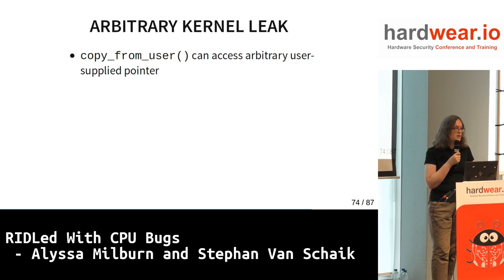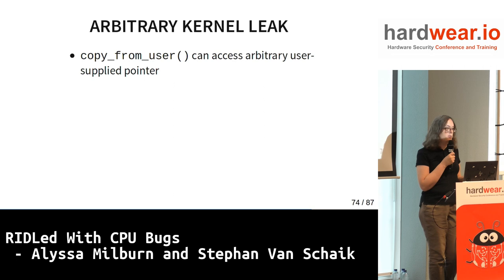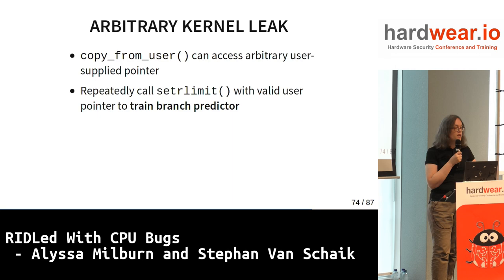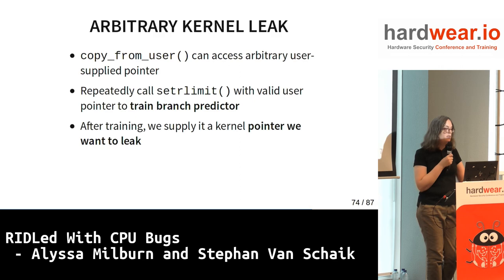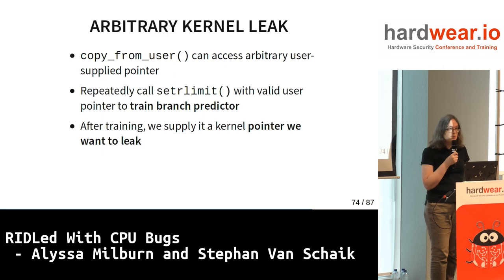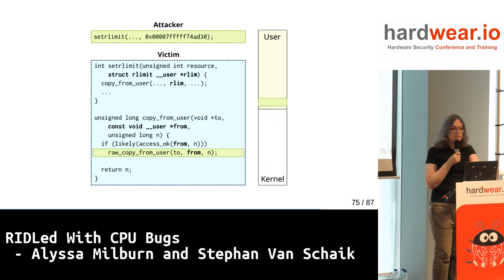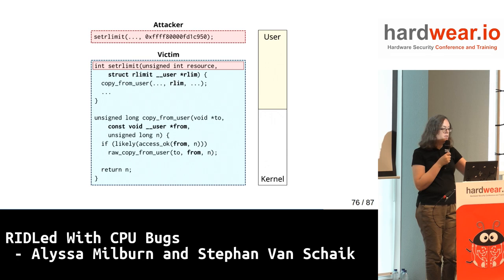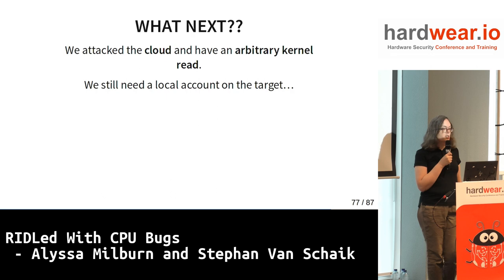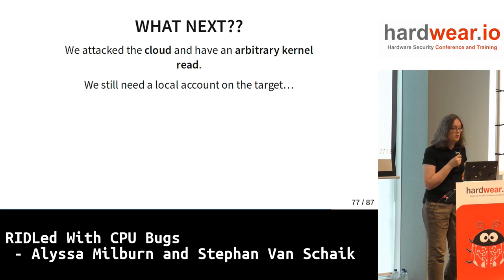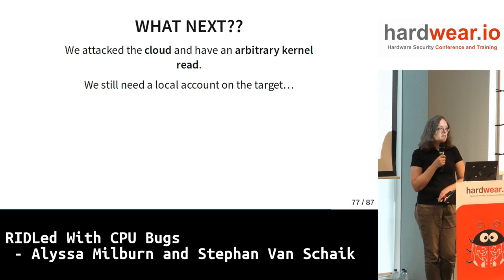In the Linux kernel there's a function called copy_from_user that accesses an arbitrary user-supplied pointer. We repeatedly call a fast system call to train the branch predictor — this is always valid, we never take the error case. Then we give it a kernel pointer we want to leak, which can be a pointer into the physmap to grab arbitrary physical memory. It gets executed speculatively, and then we leak. There are mitigations against this and they're in place on all operating systems now. But it gives an idea of the real risks. Everyone thought Spectre was patched — you don't have any array indexes left. But it turns out you just can't touch memory if you want to be safe.